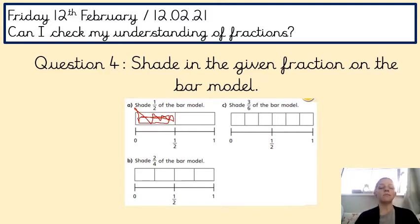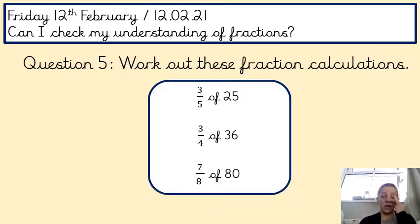Step B, two quarters. Remember, it's split into four parts. How many of those parts do you need to break down in order to get two quarters? And C, shade three-sixths of the bar model. Again, it's been split into six. How many of those boxes do you need to shade in?